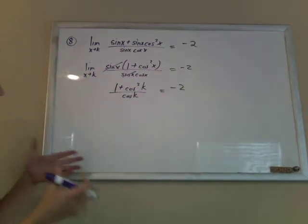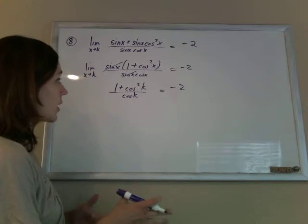Cosine squared k over cosine k, equaling negative 2. If I want this to work, there's no way that k could make the bottom 0, so it is okay to do this.